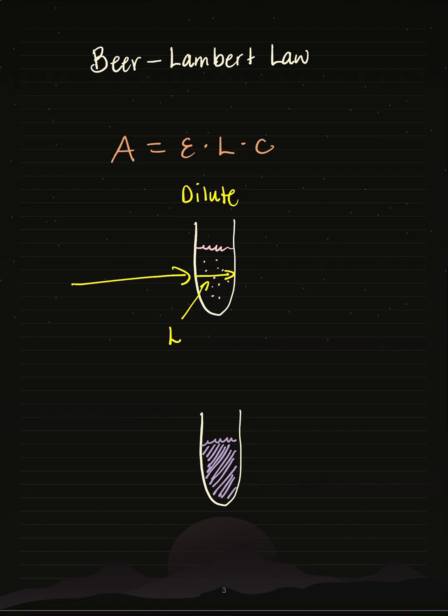Now, when the light goes through, some of it will get absorbed, but because this is dilute, a lot of it will get transmitted, meaning that the light is just going to pass straight through. So my dilute solution has high transmission and low absorption.